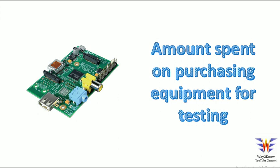Generally, costs are divided into recurring and non-recurring. Recurring costs are those you incur repeatedly — for example, if you want to produce 10 boards, you have to manufacture 10 bare PCBs and purchase components for all 10 boards. These are recurring costs because you have to invest again for each unit. Thanks for watching the video.